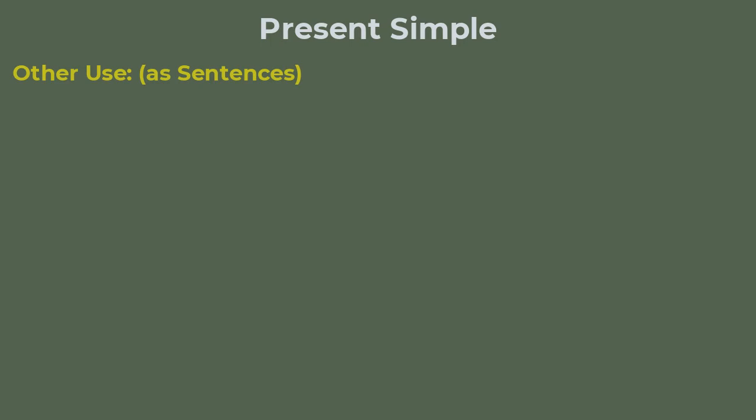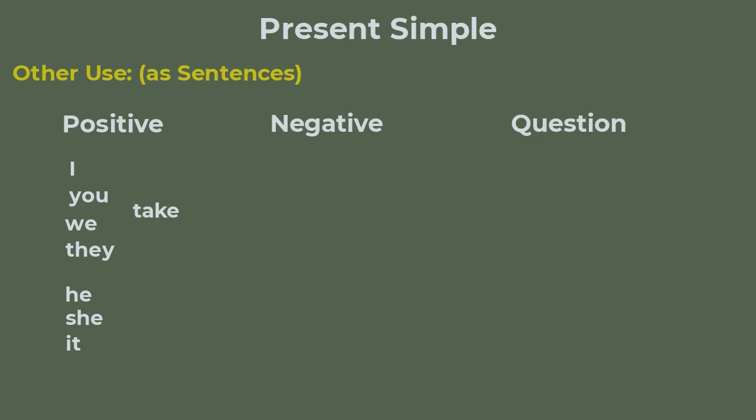The present simple can also be expressed in three different forms: as a positive sentence, negative sentence, or as a question. A positive sentence looks like I, you, we, they take and he, she, it takes.